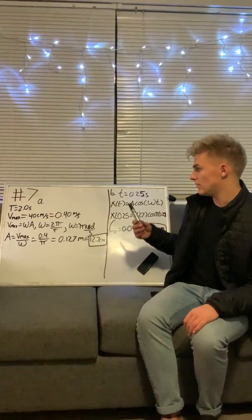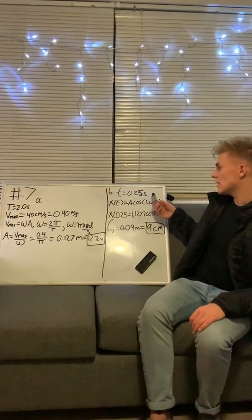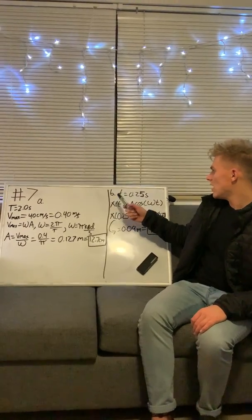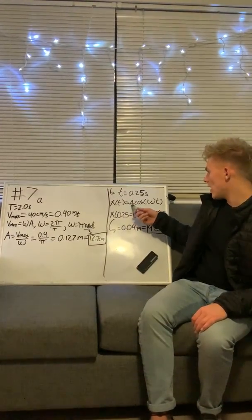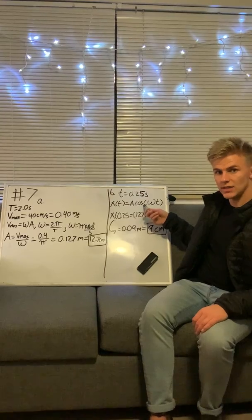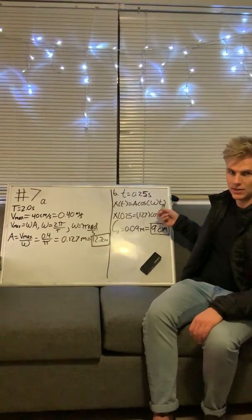Part B asks us to find the glider position at time equals 0.25 seconds. We can use the equation X(t) equals A, our amplitude, times cosine of omega times t.